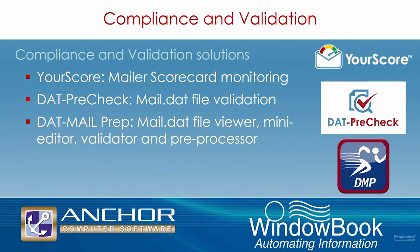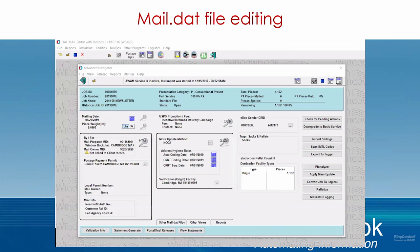DAT PreCheck allows users to validate mail.dat files as soon as they come out of the pre-sort process, catching potential issues before going into production or submission to Postal 1. DAT PreCheck validates the MIDs, CRIDs, nonprofit authorization numbers, labeling list dates, and service type IDs (STIDs). DAT Mail Prep is another tool for viewing problem mail.dat files to pinpoint errors, serving as a validator against IDEAlliance mail.dat specifications, and also acting as a preprocessor to make changes prior to importing into other systems — for example, to split off certain pre-sort levels to send mail to a commingling operation. In each case, these solutions automate what would typically be tedious manual tasks.